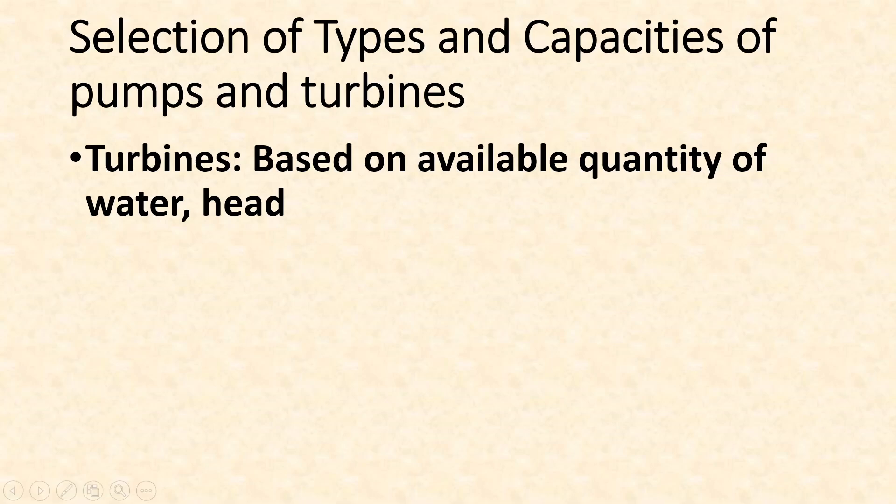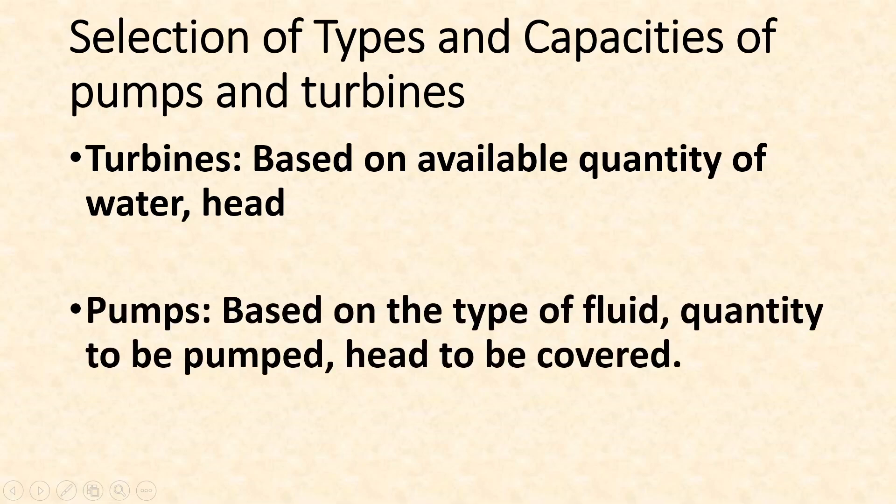Similarly in case of pumps also, based on the type of fluid we may have to select different pumps. For example, if you are trying to pump gas or air you may have to use a different pump. For water, different kinds of pump. For viscous liquids, different pumps. Sometimes you may have to pump concrete or sludge, so for all those purposes we may have to select different types of pump. Again it will depend on quantity of liquid or fluid to be pumped and the head to be covered, that means up to how much height or how much distance you are going to pump the liquid. Based on all these things we'll have to select the type of pump or turbine and their sizes.